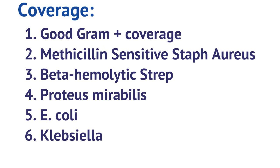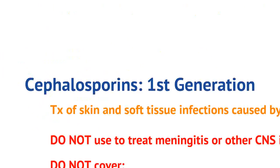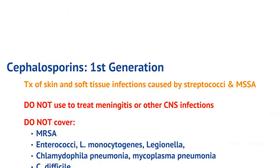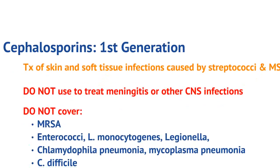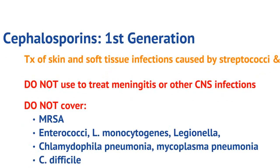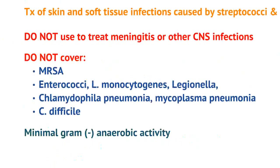First generation cephalosporins should be used for the treatment of skin and soft tissue infections caused by streptococci as well as methicillin-sensitive Staph aureus. You should not use first gen cephalosporins to treat meningitis or other CNS infections. First gen cephalosporins do not cover MRSA, enterococci, Listeria monocytogenes, Legionella, Chlamydophila, Mycoplasma, or Clostridium difficile.